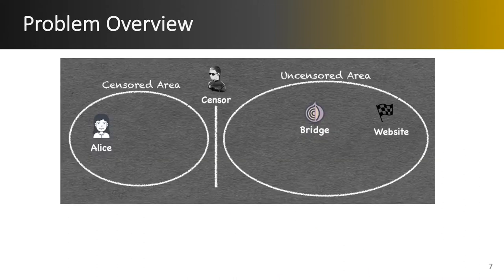Let's take a look at the problem in more detail. On the left we have the censored region that is being monitored by the censor and on the right we have the uncensored region. The problem that Alice faces inside the censored region is that she wants to connect to a website outside of the region that is banned by the censor, meaning that any connection to and from this website is going to be blocked. A possibility is to connect to another node — in our example a Tor bridge — and then the bridge connects to the website on behalf of Alice. But the question is how would Alice connect to this bridge?